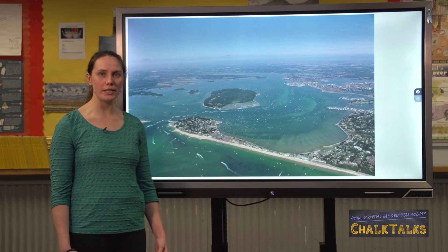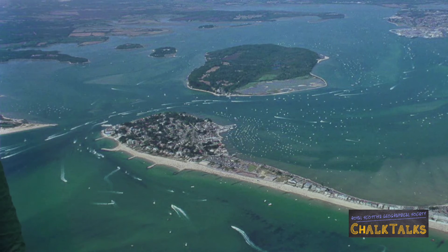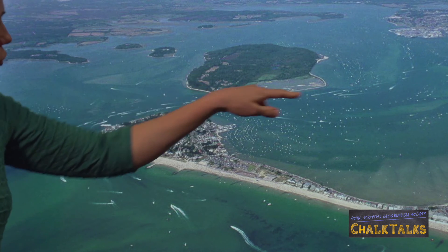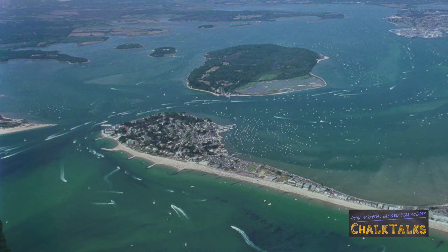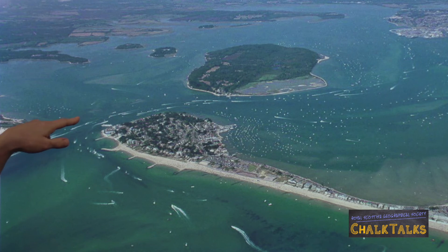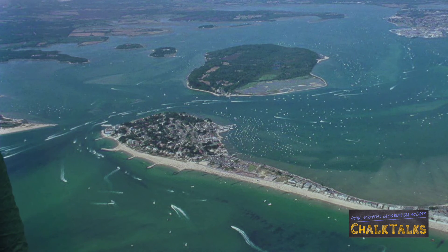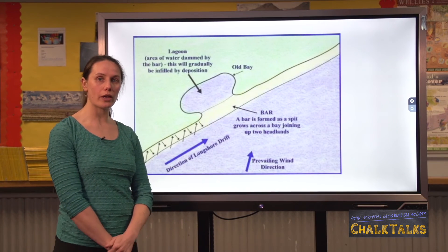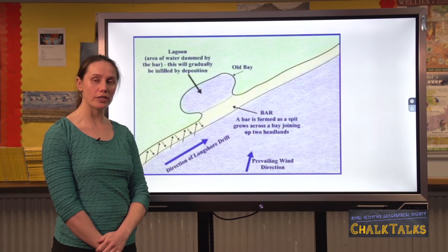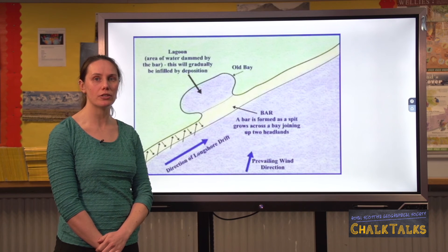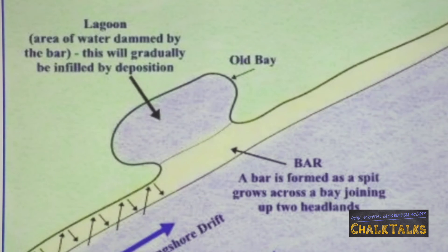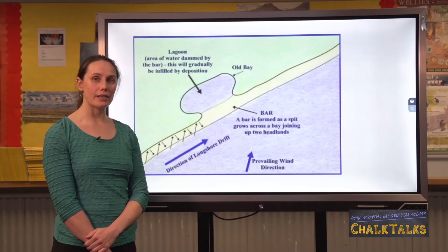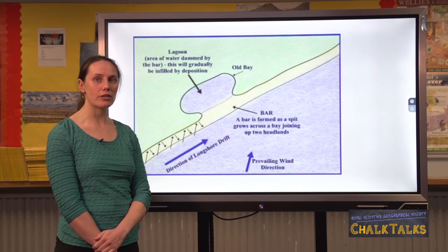Sandbanks is a spit at Poole Harbour, and as you can see, there's a strong river that stops the spit growing further by eroding material from its end. If there's not a strong river, the spit is likely to extend all the way across the mouth of the bay, forming a bar — another feature of coastal deposition you might be asked to explain. The water trapped behind the bar is known as a lagoon, and because the water isn't moving, deposition takes place and eventually this may turn into land.